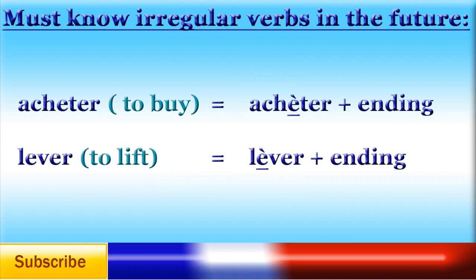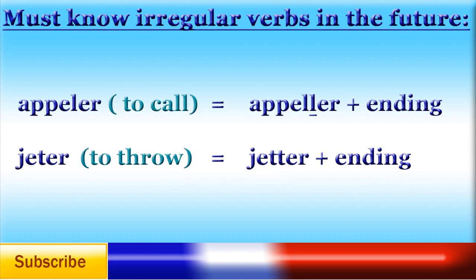Here are some irregular verbs you should know in the future tense. Acheter — to buy — and lever — to lift: the only irregularity is the need for an accent on the first e. Appeler — to call: you need to add an L to the stem. Jeter — to throw: you need to add a T to the stem.